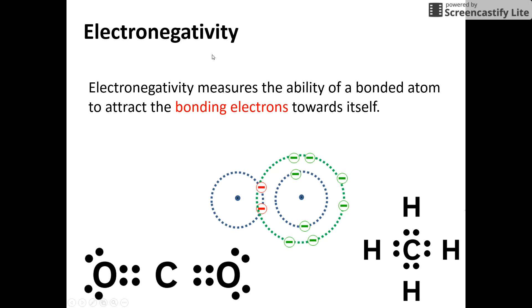Now what about electronegativity? First of all, what is it? It measures the ability of a bonded atom to attract the bonding electrons. It's actually an attraction. A lot of students think of electronegativity and think of electrons, negative, repulsion, but it's actually an attractive force. We're looking at the attraction of that nucleus on the bonding electrons.